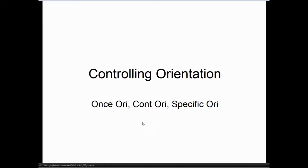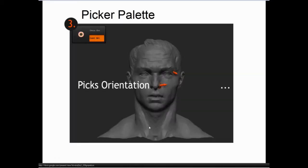Controlling your orientation is a very powerful feature inside of ZBrush, and it's not often used or discussed. There are three types of control: Once Orientate, Continuous Orientate, and a Specific Orientation.